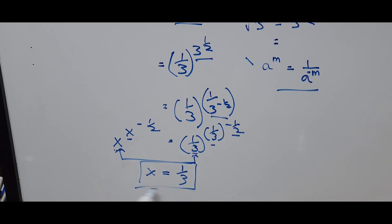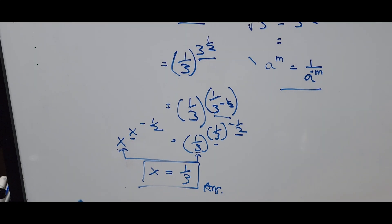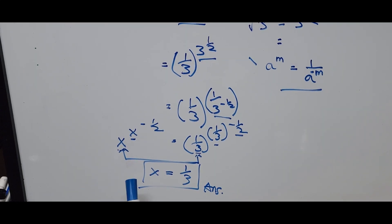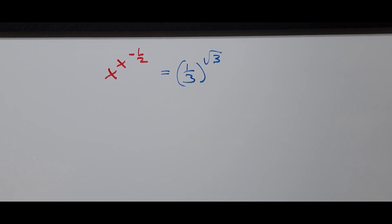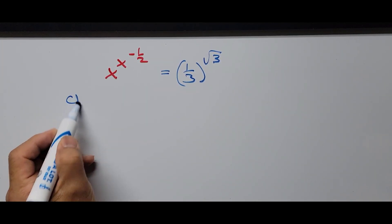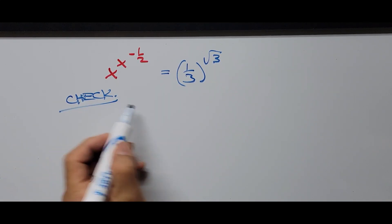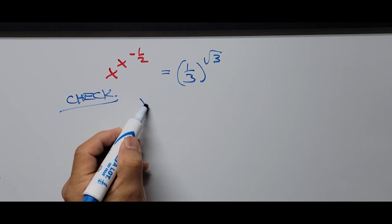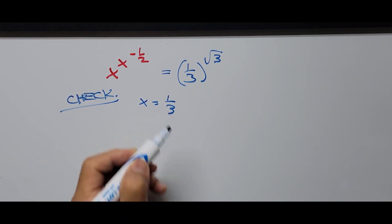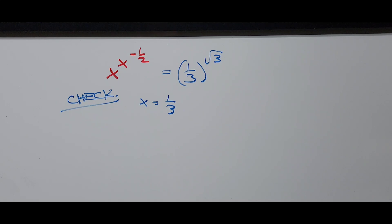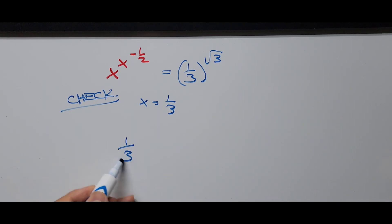That's the final answer. From here, if we were to check our answer by substituting the value of x into the original equation — here I have written the original equation — we have the value of x, that is 1 third.